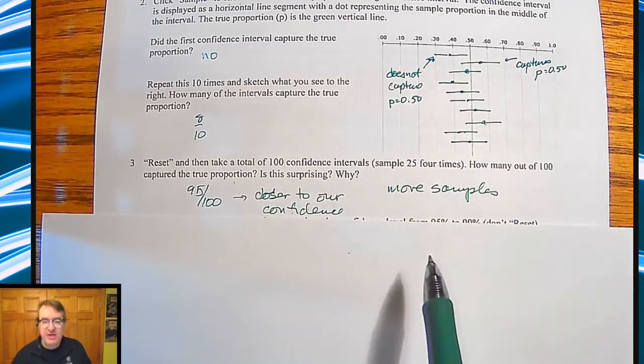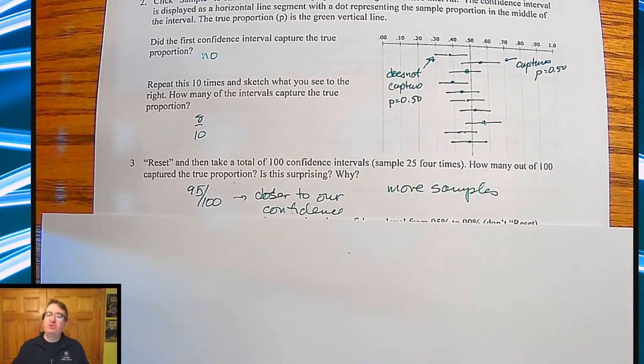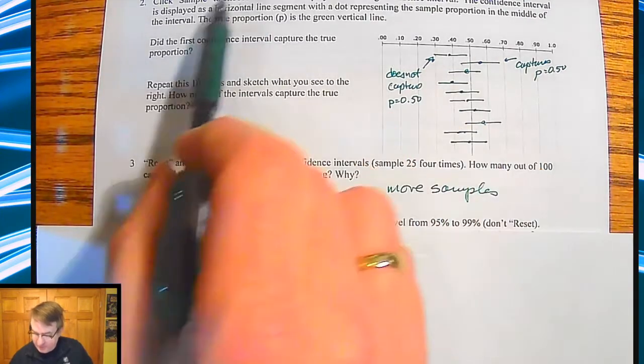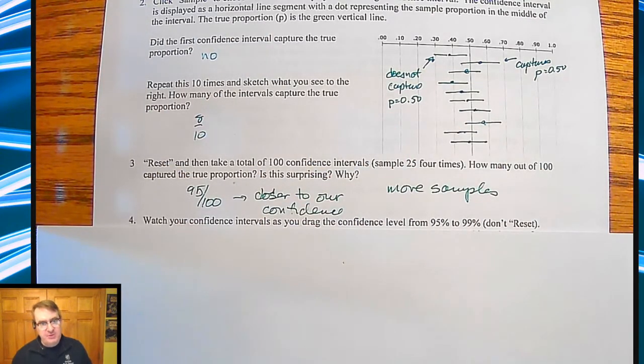If I take more and more samples, I'm going to get closer to whatever the true proportion is going to be, right? And again, just as you go through this, your answers are going to be different for all of these.